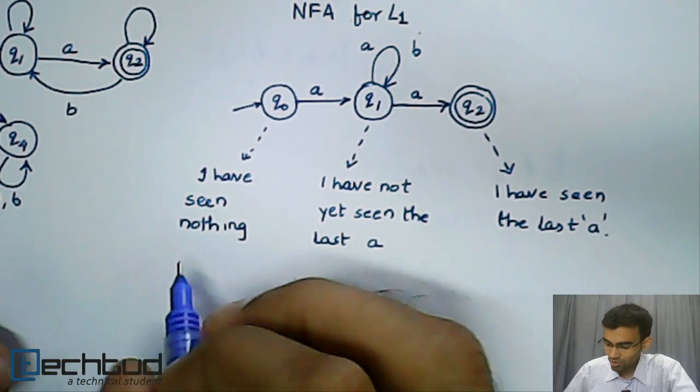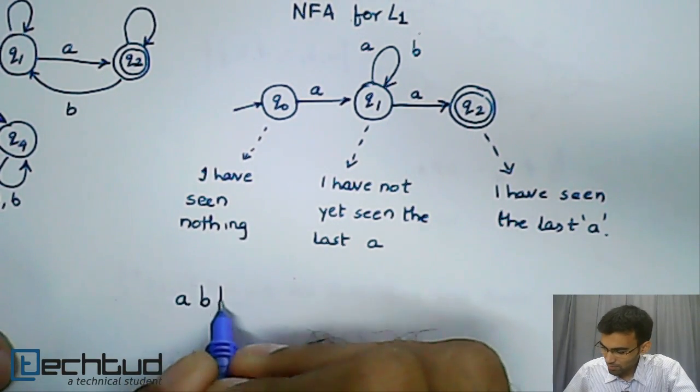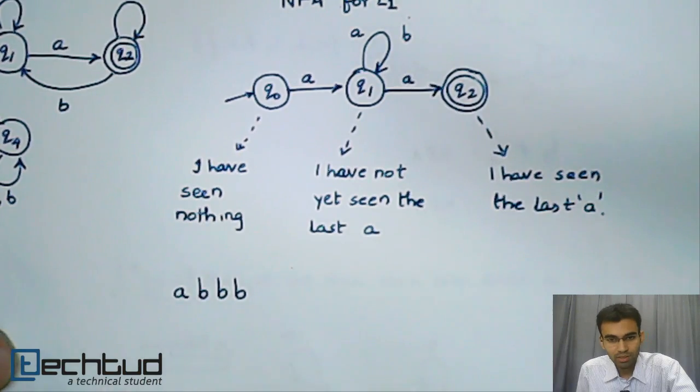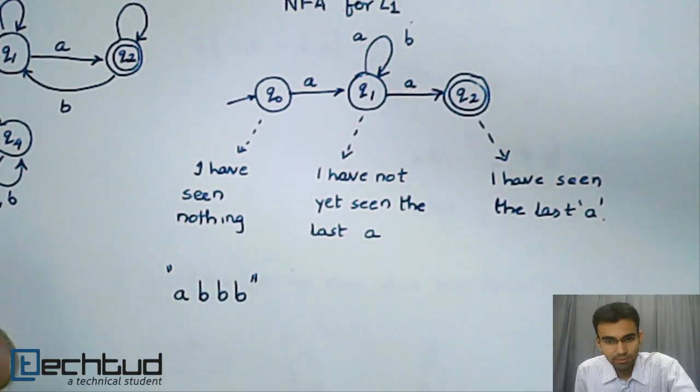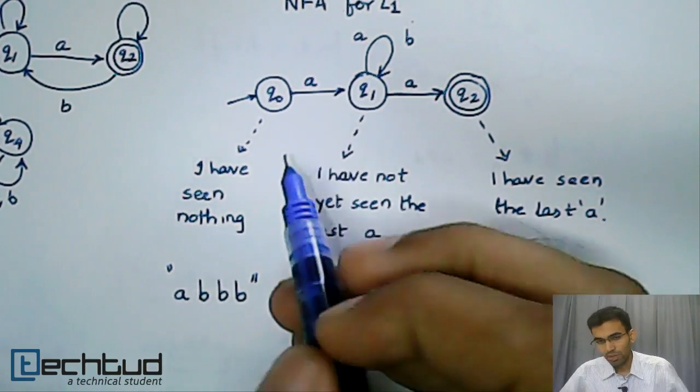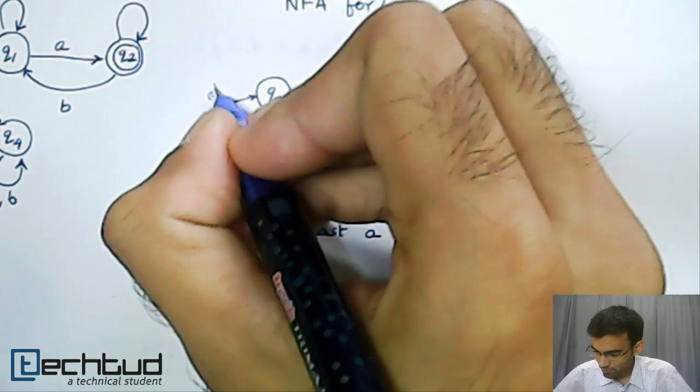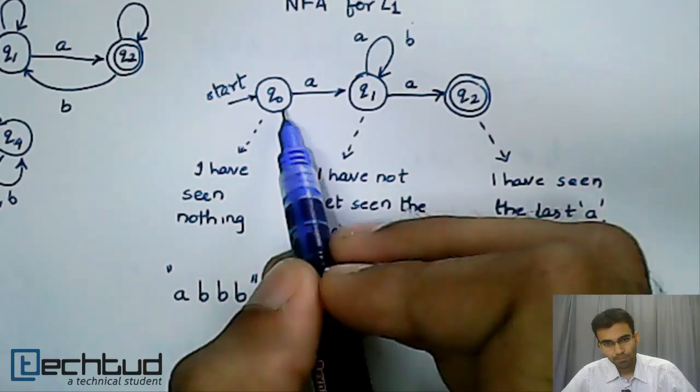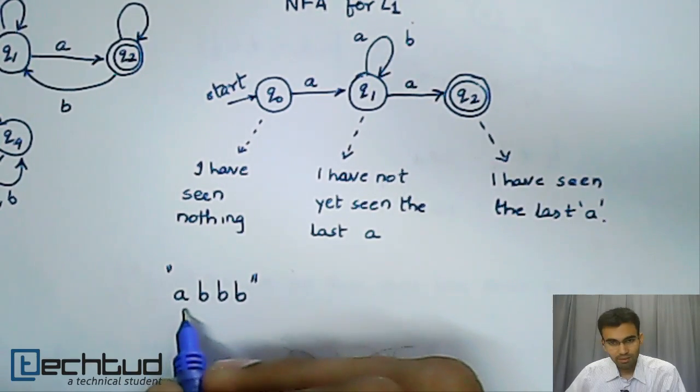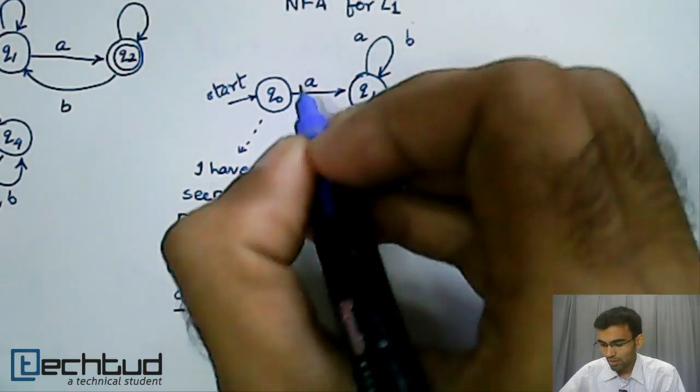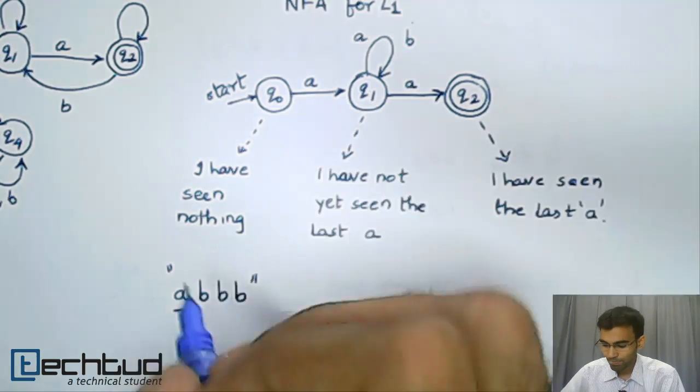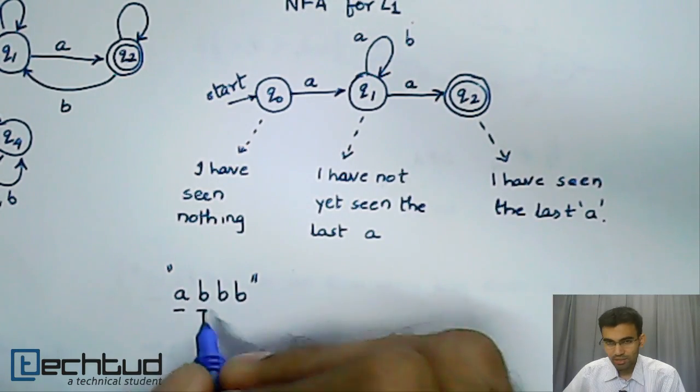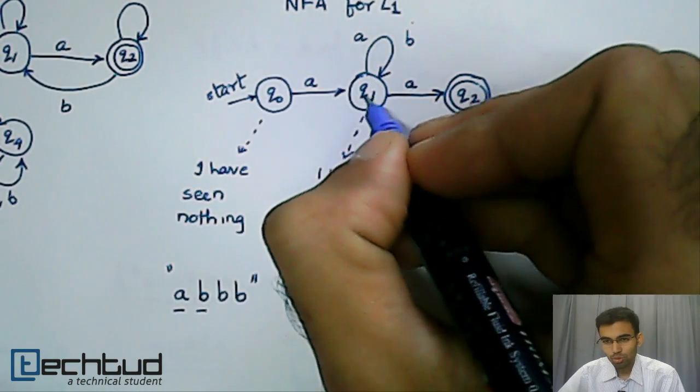For a string A, B, B, B, my string starts with an A and ends with a B. When we start, we will be in Q0. We will read the first A and we will move from Q0 to Q1. We will read the B and on Q1, we have only one transition labeled with a B.